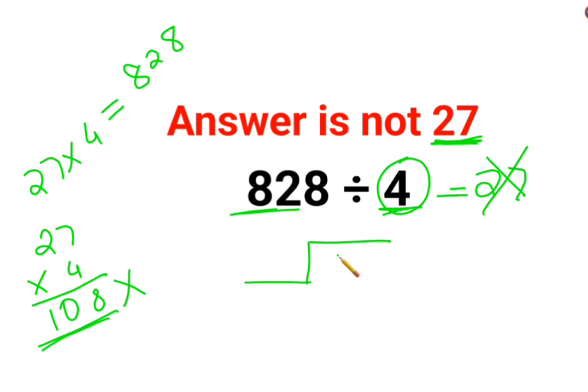So let's try and understand what exactly went wrong while doing this division. So 4 times 2 gets you 8. This is correct.